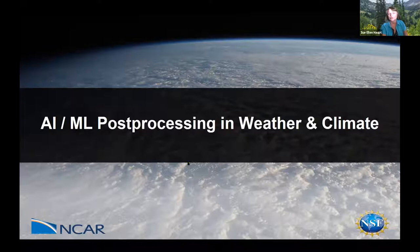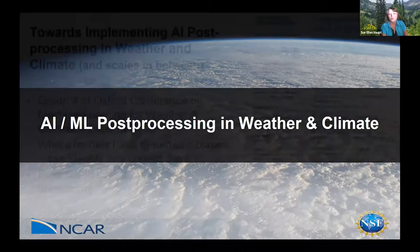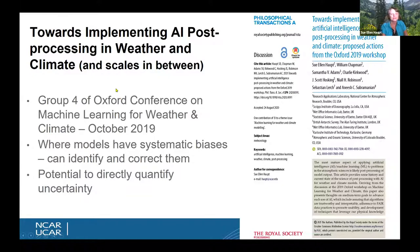We'll start with AI and machine learning as a way of thinking about post-processing. This part of the talk is going to be very synergistic with what David John presented earlier this morning. I want to talk about some work that emerged during a workshop I attended in October 2019 — the Oxford Conference on Machine Learning for Weather and Climate — where we had several breakout groups. I was asked to lead group four, which emphasized post-processing, thinking about how we can use post-processing effectively and push it into more operational use.